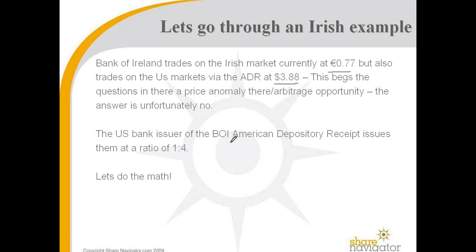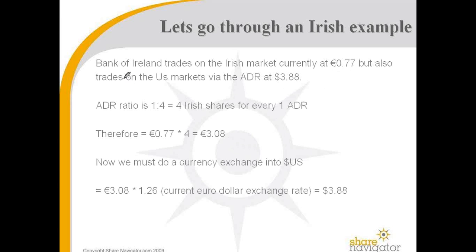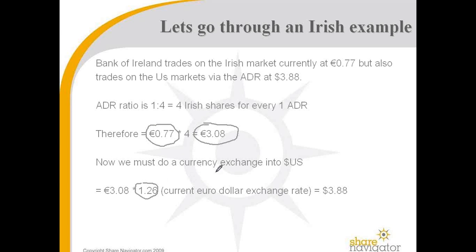The US bank issuer of the Bank of Ireland American Depository Receipt issues them at a ratio of 1 to 4. Bank of Ireland trades on the Irish market at $0.77 in Euro, but also on the US market via the ADR at $3.88. The ADR ratio of 1 to 4 means 4 Irish shares for every 1 ADR. Therefore you multiply the Irish share price by 4 and get 3.08. The exchange rate at the time was $1.26, so you multiply 3.08 by 1.26 and get the current share price of $3.88 — and that's how we get our ADR value.